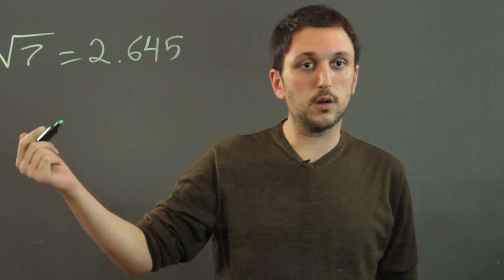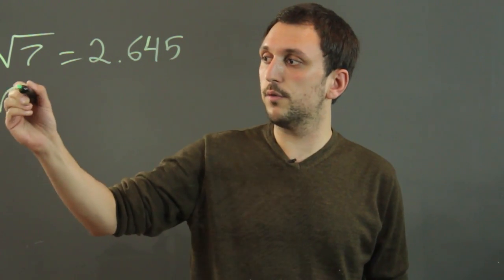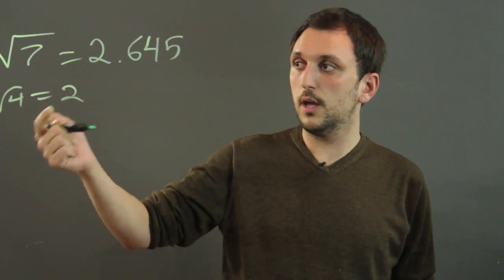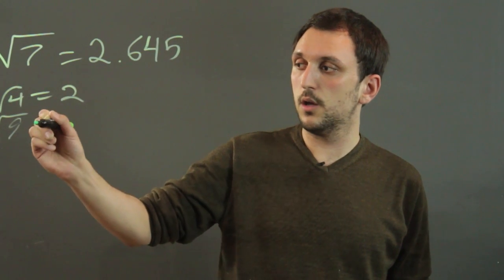Now the square root of 7 you can also sort of approximate because the square root of 4 is a perfect square that would end up with 2, and then the square root of 9 would be 3.